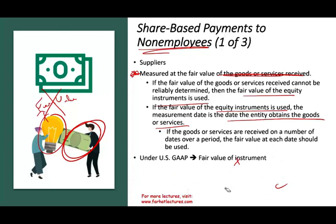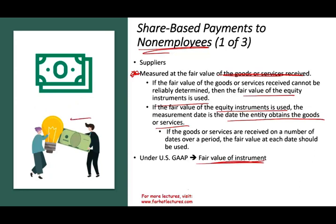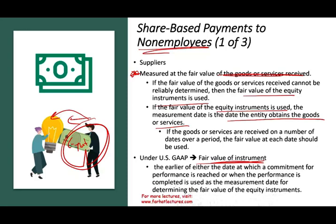Under US GAAP with non-employees, we look at the other party's fair value. The earlier of either the date at which a commitment for performance is reached or when performance is completed is used as the measurement date for determining the fair value of the instrument under GAAP. So notice: with non-employees under IFRS we look at the fair value of goods received first; under US GAAP we start with the fair value of the instrument.